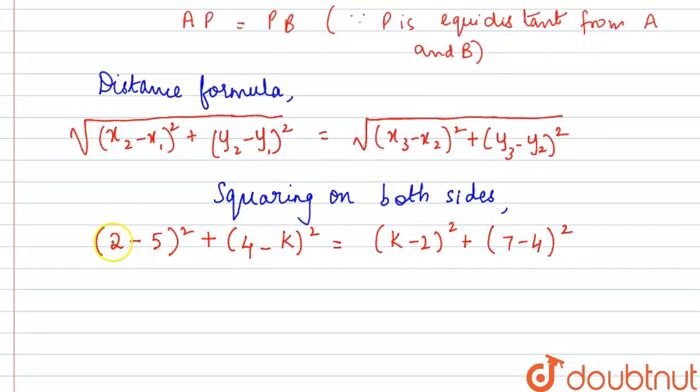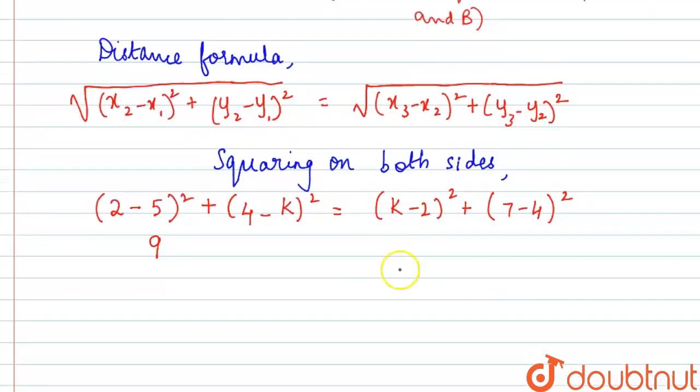Now we'll solve this. So 2 minus 5 is minus 3. Minus 3 whole square will be 9. Here we have (4 - k)² which is of the form (a - b)². So we'll apply the identity (a - b)² = a² + b² - 2ab. So this will become 4² that is 16, plus k square, and minus 2 times 4 times k that is 8k.